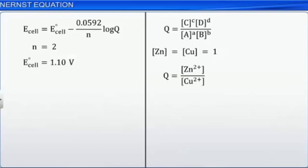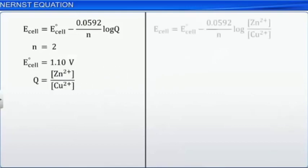Then, we can substitute our expression for Q in the Nernst equation as shown here. From here, we can substitute our values for E0, N, and the ion concentrations into the Nernst equation.